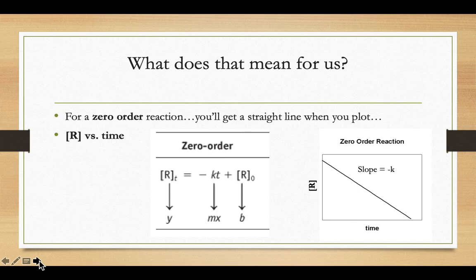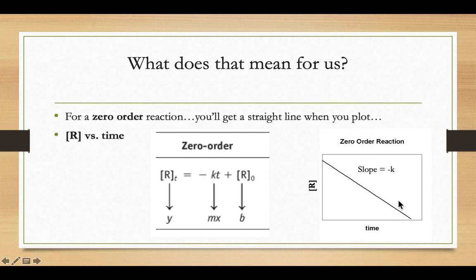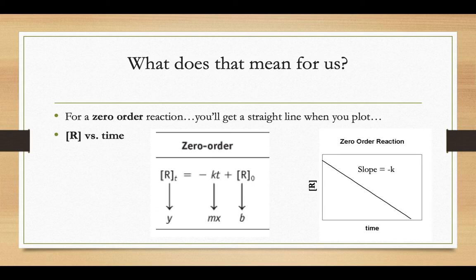For a zero order reaction, you'll get a straight line plot when you do concentration versus time. The concentration of R, our reactants, naturally decreases over time as the reactants turn into products. The slope of this line correlates to the negative of our rate law constant. This is much easier for solving K than doing multiple trials in a kinetics lab. If you get a straight line when you plot concentration versus time, you know it's zero order.